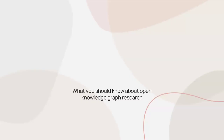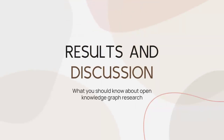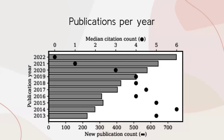Let's see what we found out about open knowledge graph research. We see that the yearly number of publications steadily increased over the years, proving that the field is still growing. We also find that a paper received an average of three citations after three years from its publication and an average of five citations after eight years of its publication. This shows that working in this field can generate impactful research outputs.